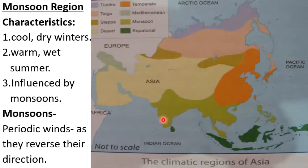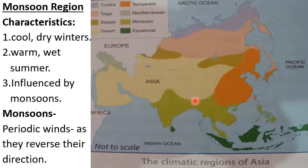The countries which fall under the monsoon region are India, Nepal, Bhutan, Bangladesh, and Myanmar. All these countries come under the monsoon region.